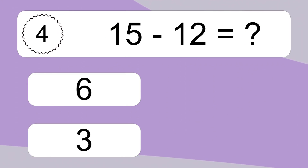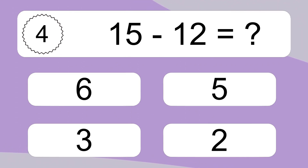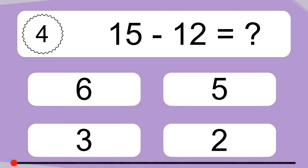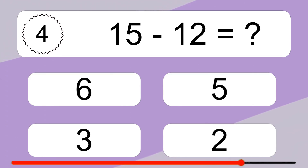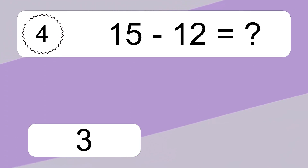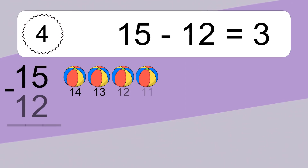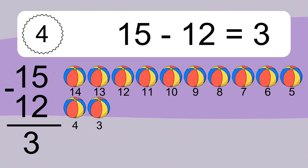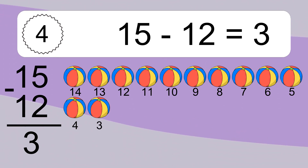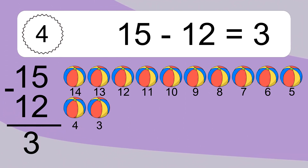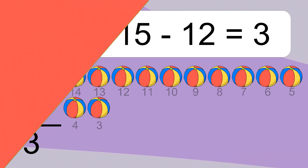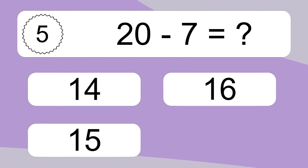15 minus 12 equals what? 15 minus 12 equals 3. Let's count it: 14, 13, 12, 11, 10, 9, 8, 7, 6, 5, 4, 3.